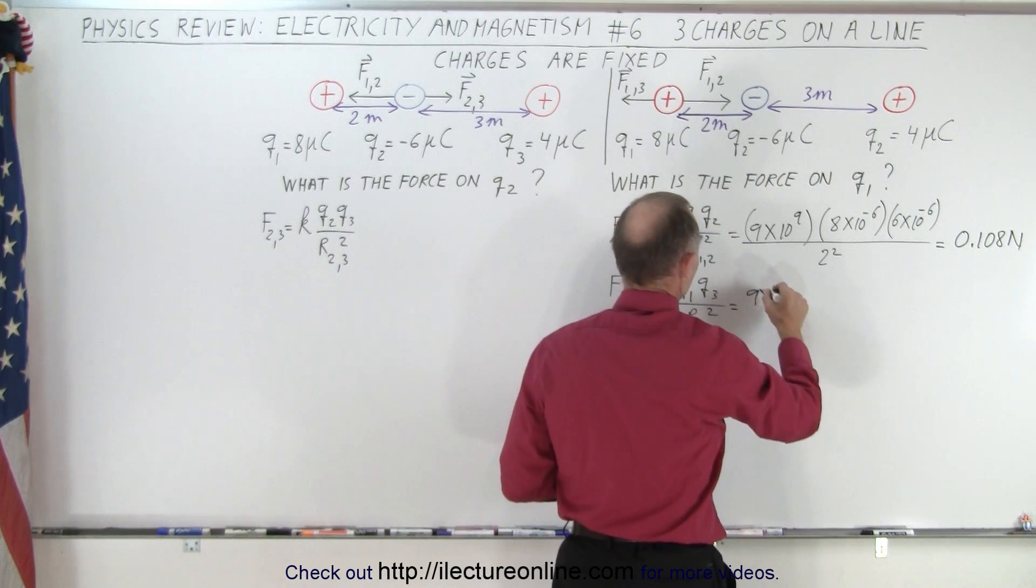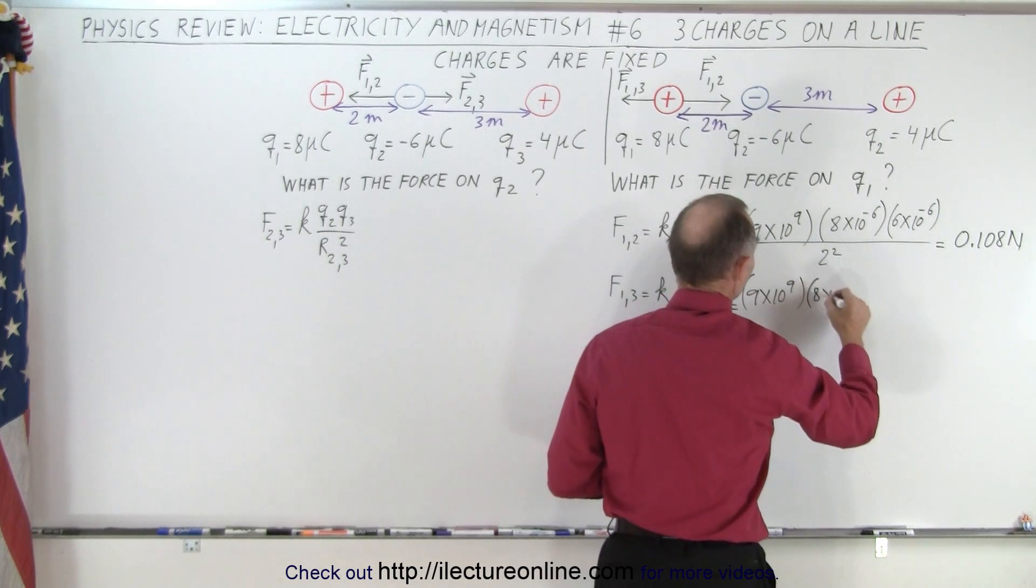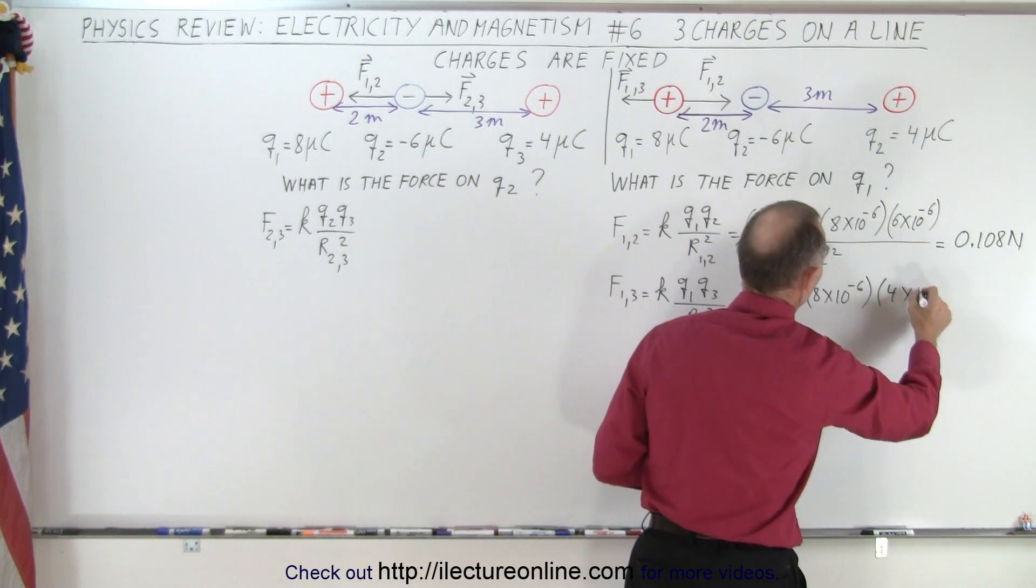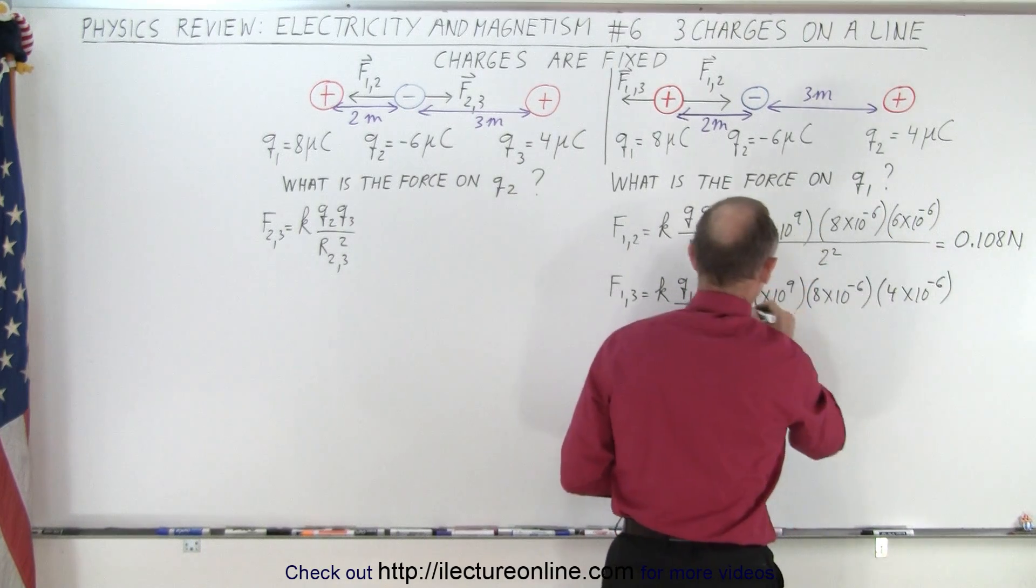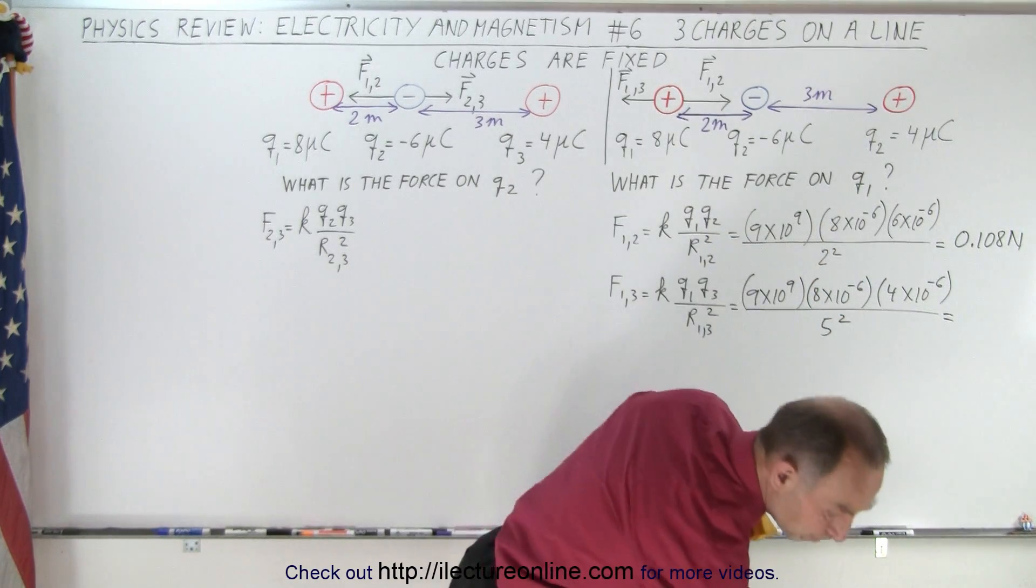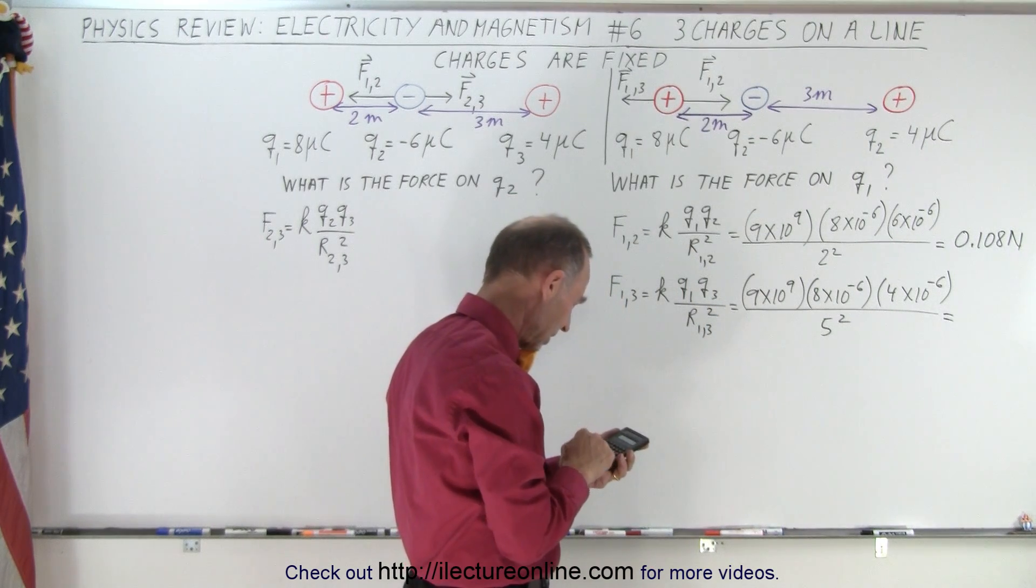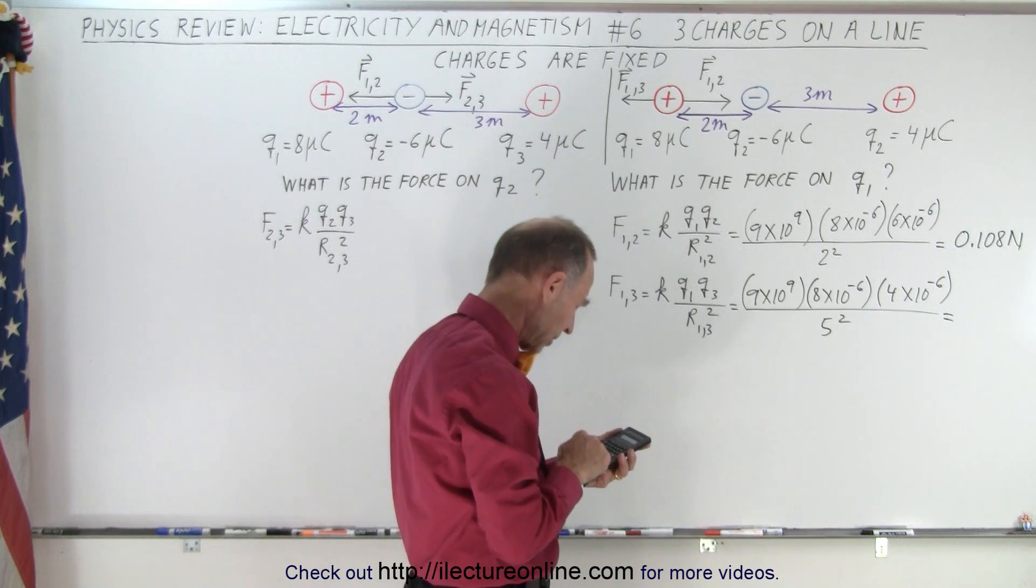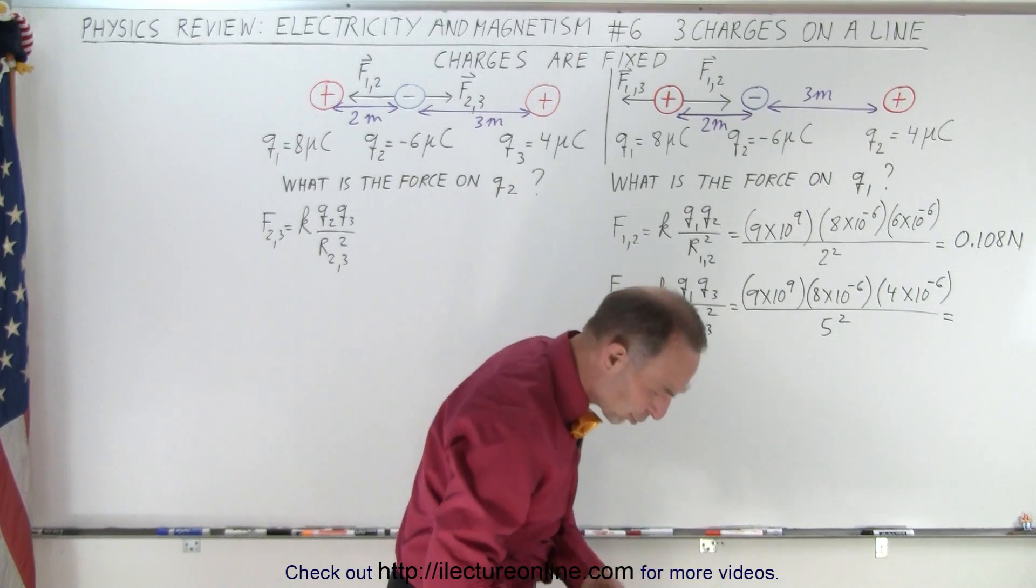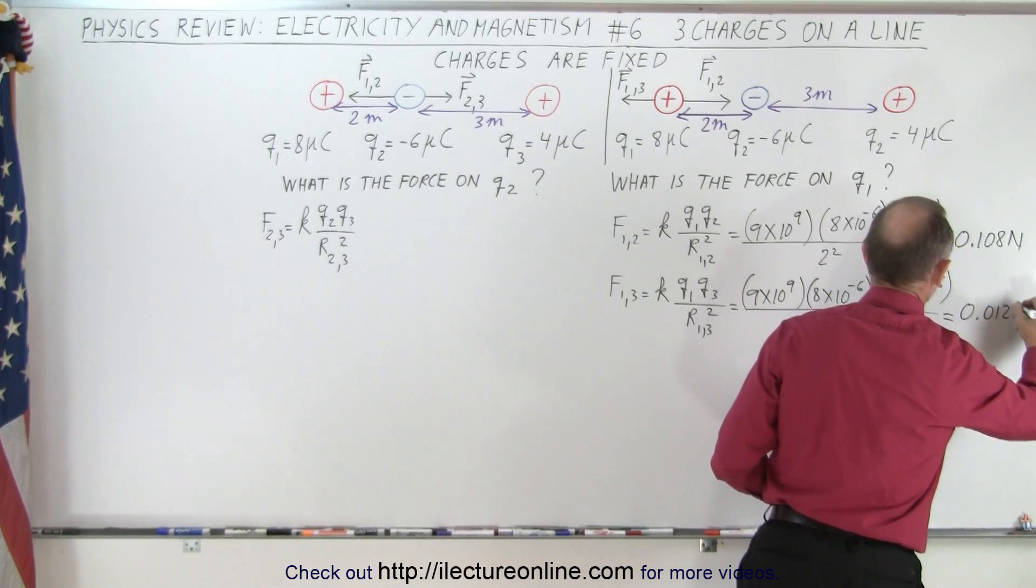For the next one, 9 times 10 to the 9th times Q1, which is 8 times 10 to the minus 6. Here we have 4 times 10 to the minus 6, all divided by the distance squared, which is 5 squared. So 9e to the 9th times 8e to the minus 6 times 4e to the minus 6 divided by 25, and we get 0.012 Newtons, rounded off.